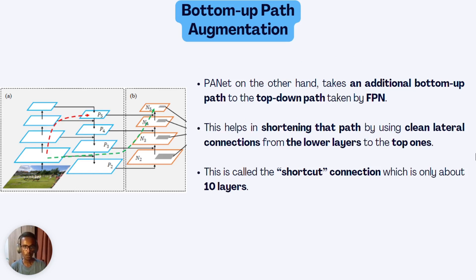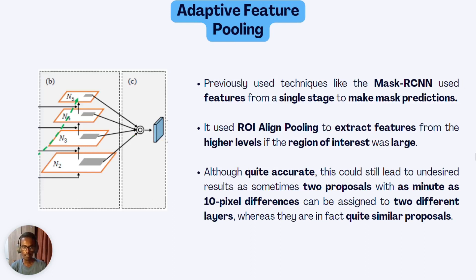The Path Aggregation Network takes an additional bottom-up path added to the top-down path of the Feature Pyramid Network. So we have: a bottom-up path, then a top-down path, and then an additional bottom-up path. There are also clean lateral connections from the lower layers to the top ones — a shortcut connection of only about 10 layers. The previously used technique in Mask R-CNN used features from a single stage to make mask predictions.